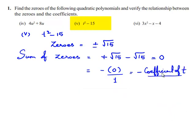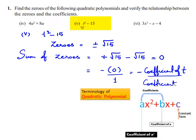The coefficient of t is 0, and the coefficient of t² is 1. So we can conclude that the sum of zeros equals -0/1, which equals 0.